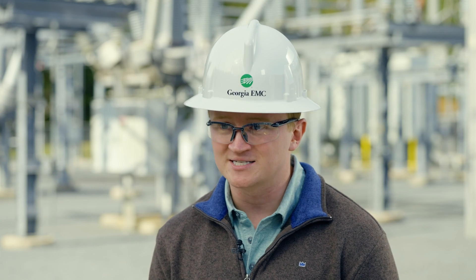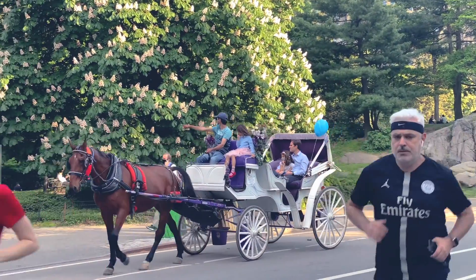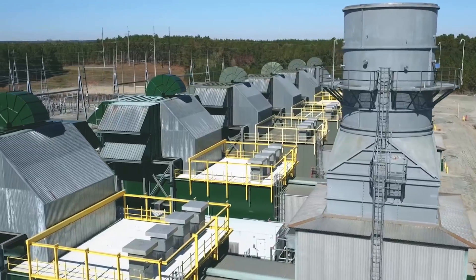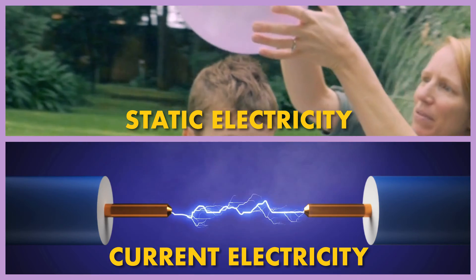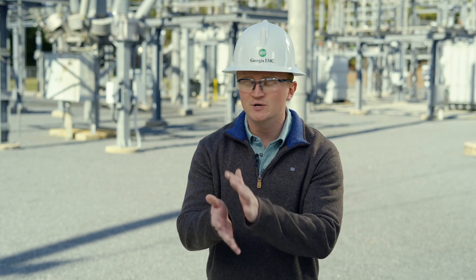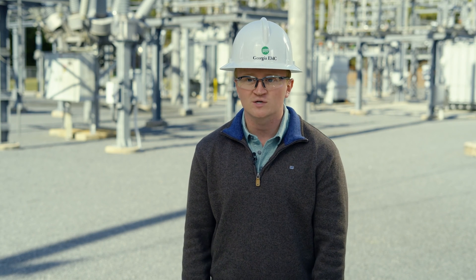We encounter electricity constantly. It exists naturally, even in our own bodies, and it can be harnessed and generated for everyday use. There are two types of electricity: static electricity and current electricity. Static electricity is caused by friction when two items rub up against each other, creating the potential for a discharge of electrons.